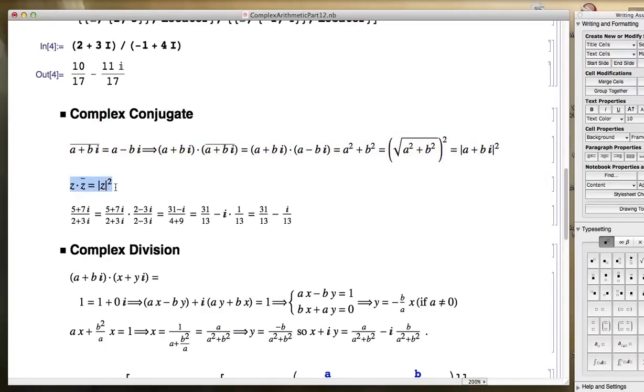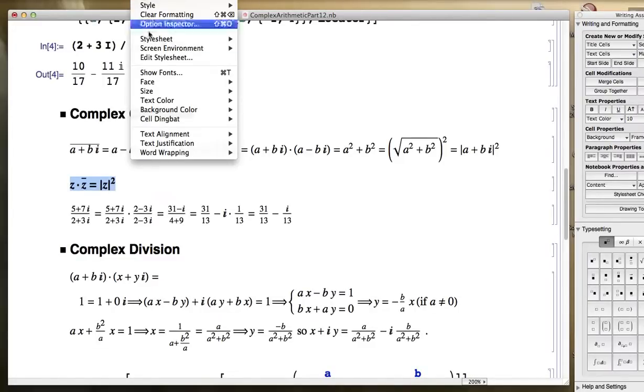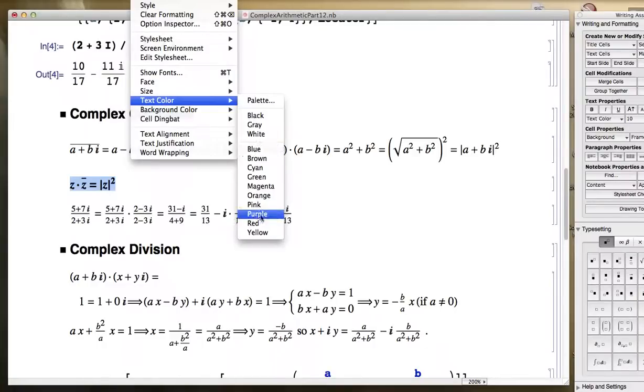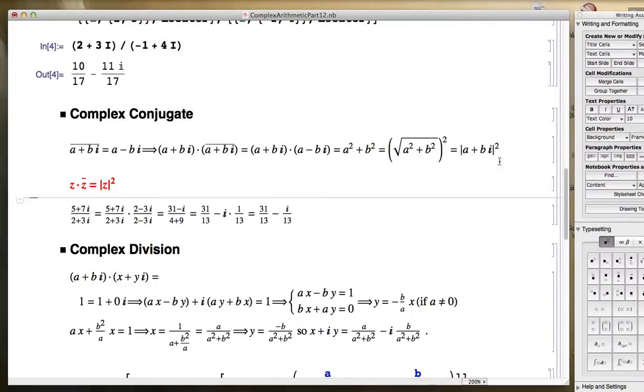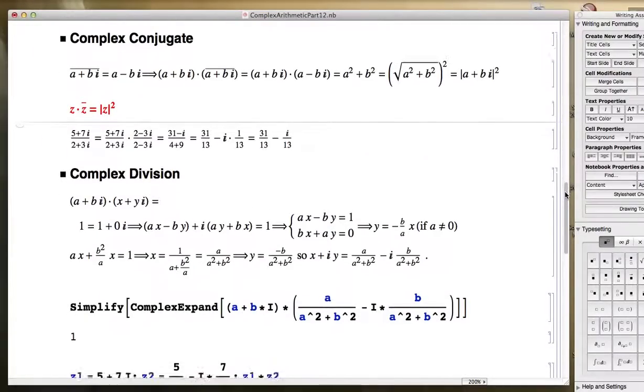In more compact form, if z represents the complex number, when you multiply it times its complex conjugate, you get the square of the modulus. That's an important formula, just like the other formulas that I've been showing you. Let's highlight it and make it red here.